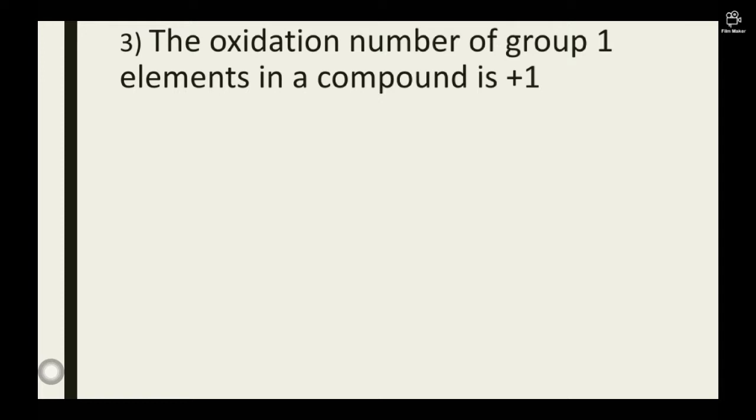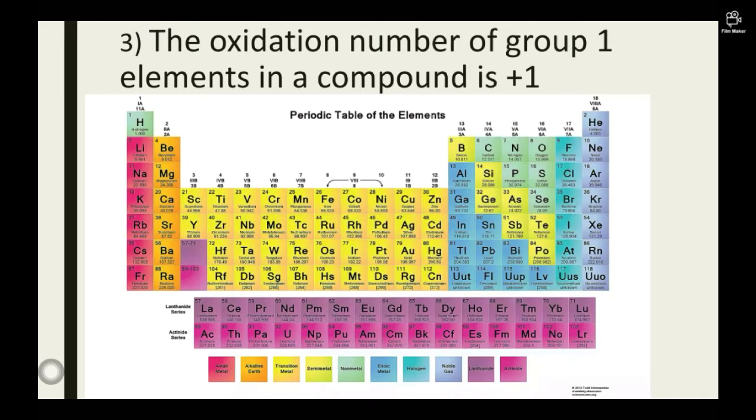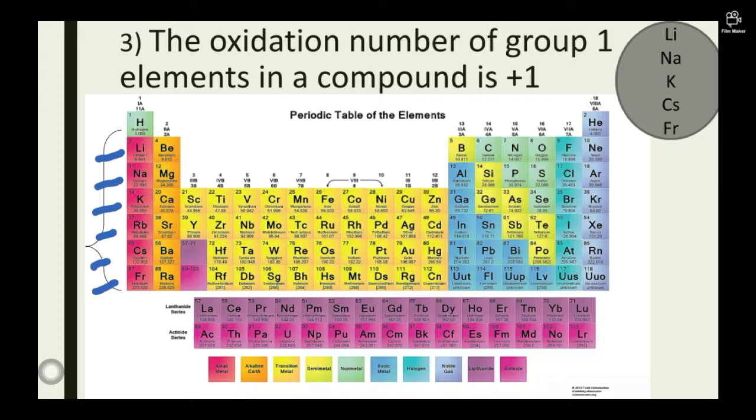Rule number 3: The oxidation number of group 1 elements in a compound is plus 1. Take a look at this periodic table. The group 1 elements have been marked and displayed on the screen. All those elements have oxidation numbers of plus 1 respectively in the compound form.